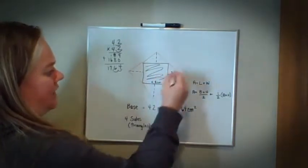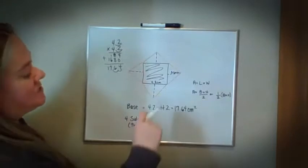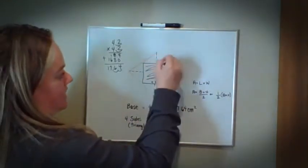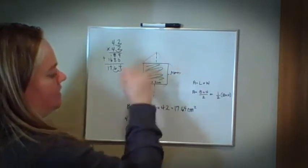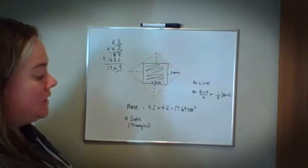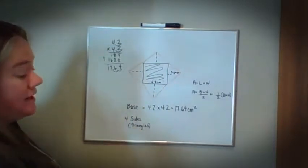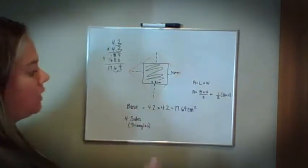I need to find for all four triangles. Notice as well, since it's a square, this triangle and this triangle and this triangle and this triangle are all going to be the same. I only have to find for one and then I can multiply by four.